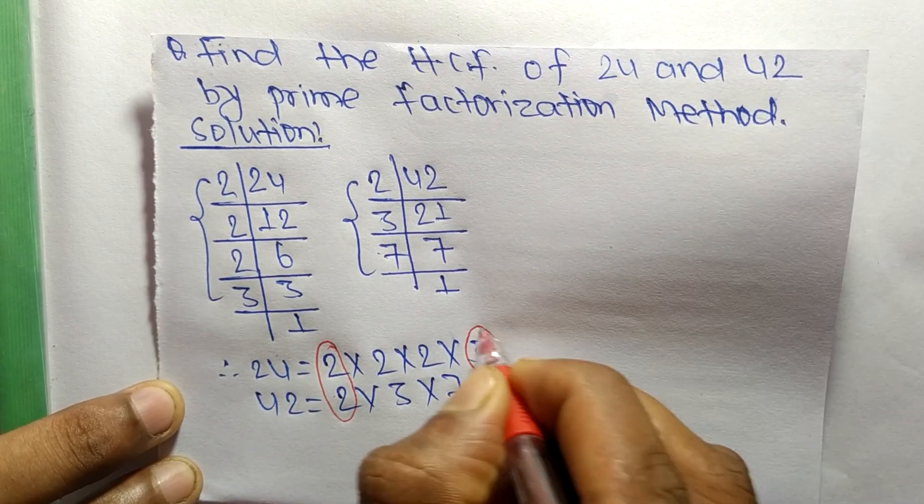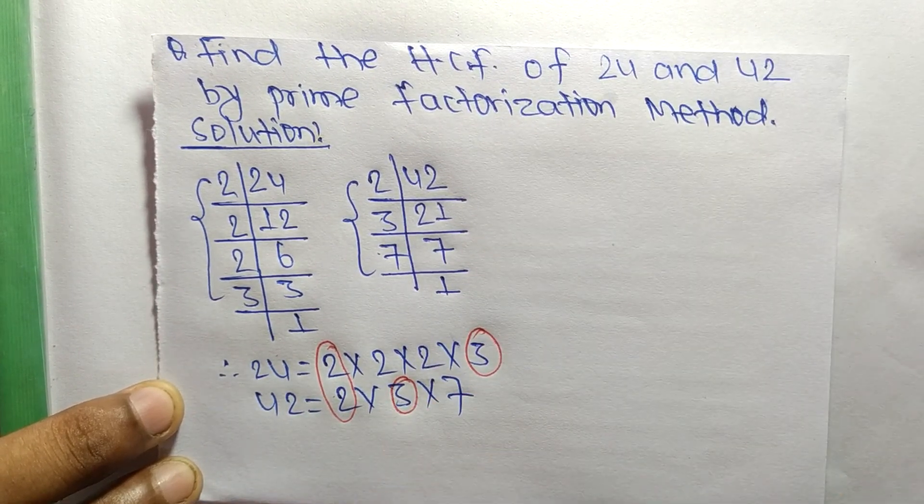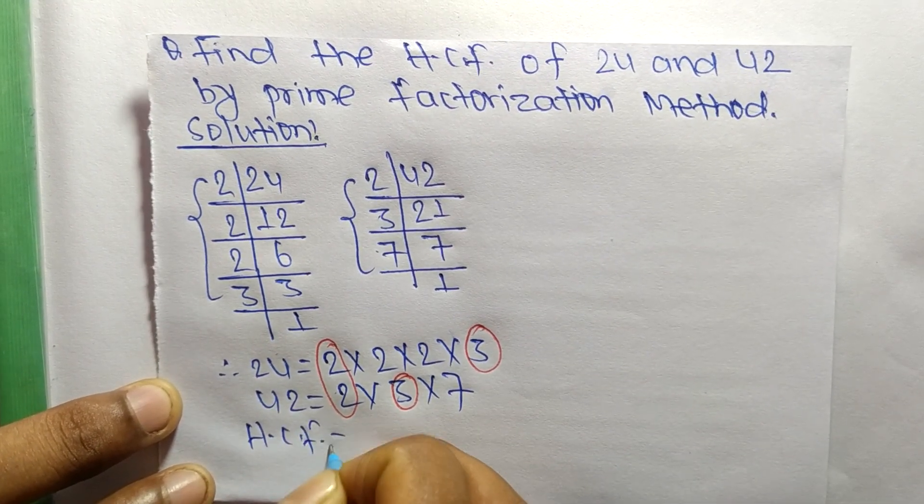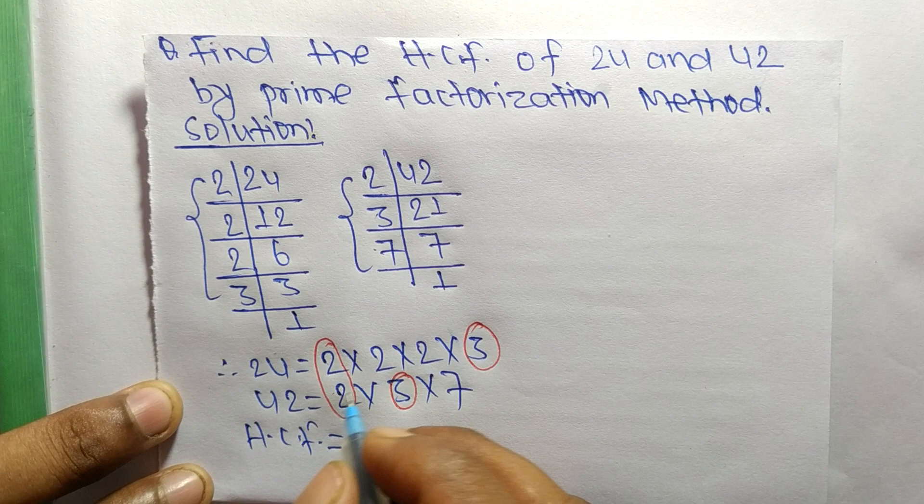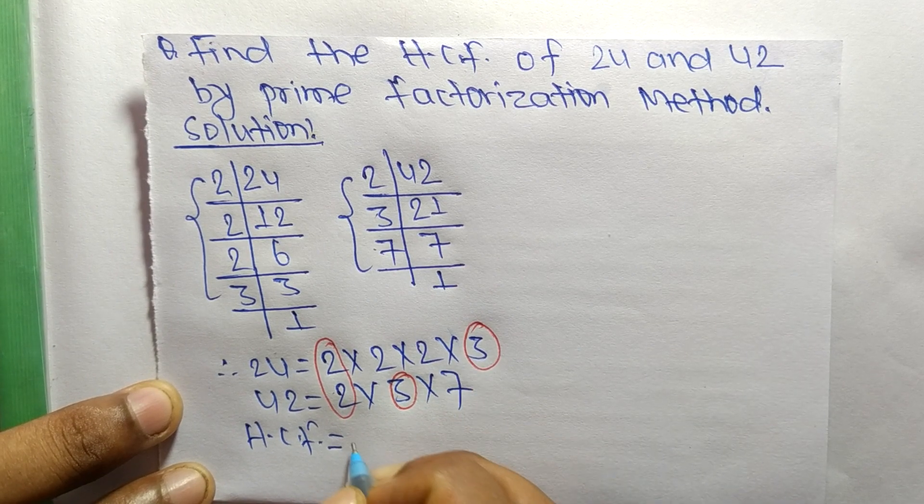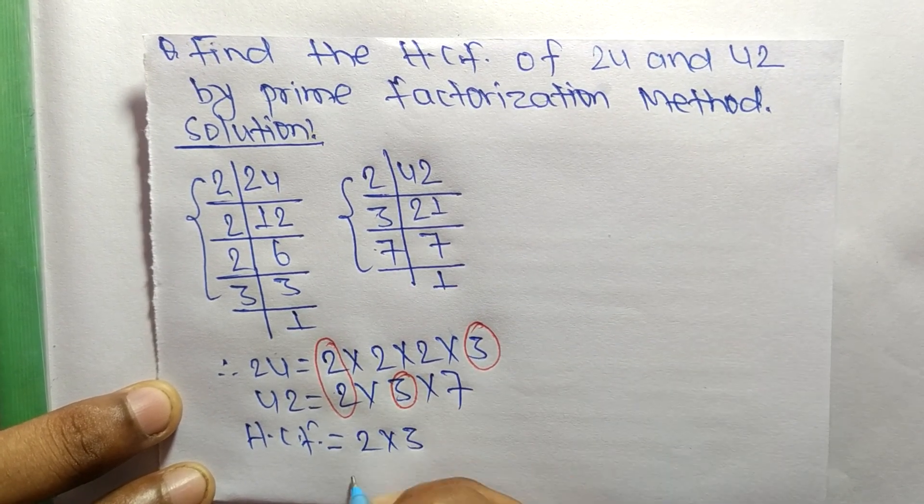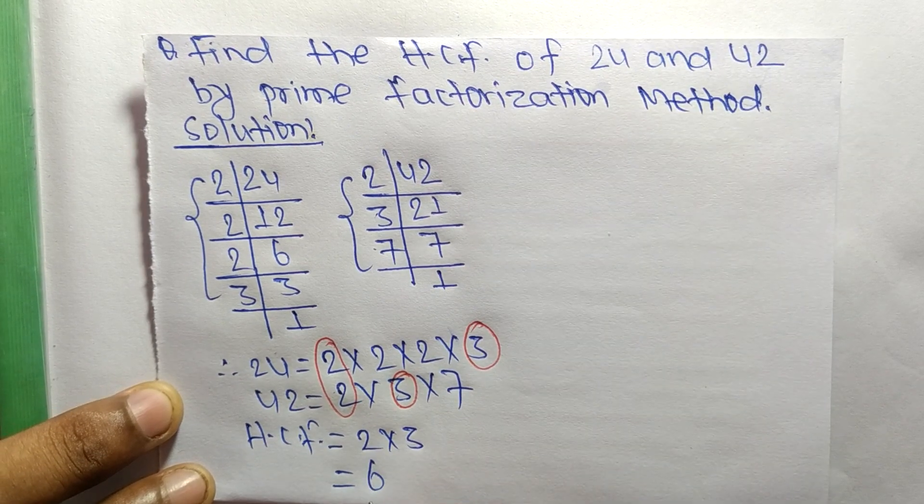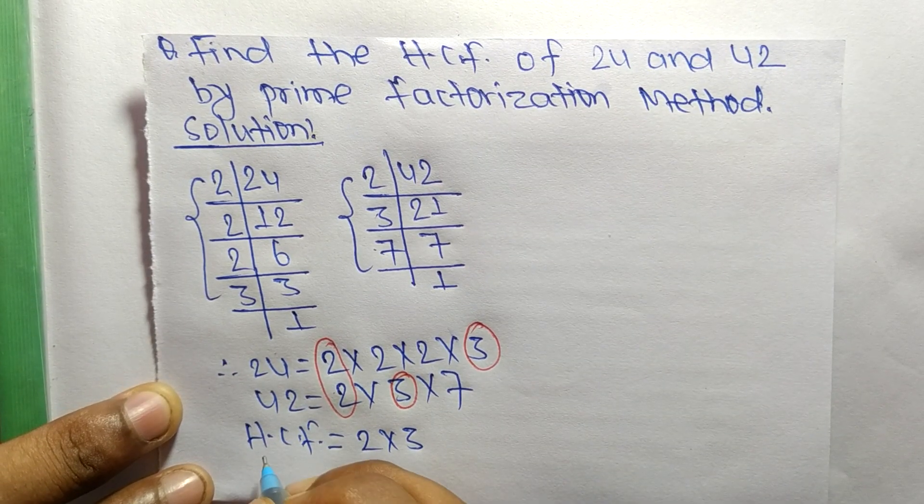So now the HCF is equal to the product of these common factors, that is 2 and 3. So it is 2 times 3, which equals 6. So 6 is the HCF of 24 and 42.